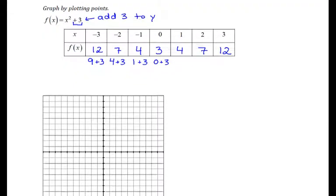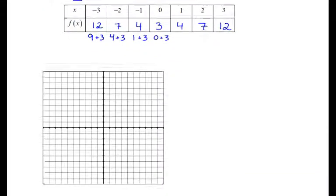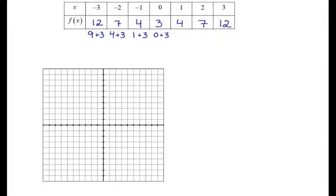Let's go ahead and plot these points on our grid. Starting with negative 3, 12, we observe that that is actually off the grid. We're not going to change our scale to fit these two, negative 3, 12 and 3, 12. These are just off the chart, so we'll skip them.